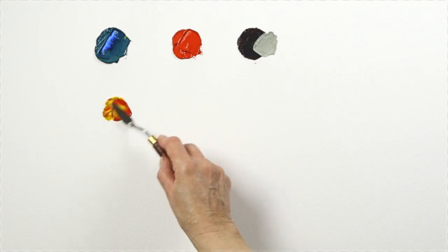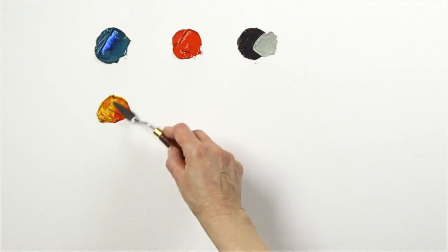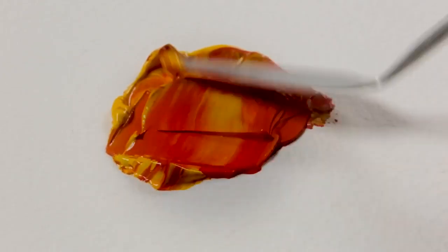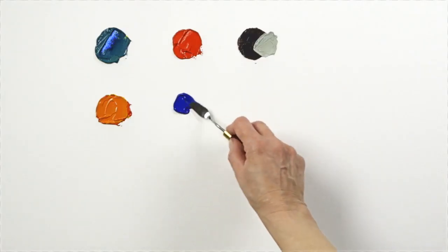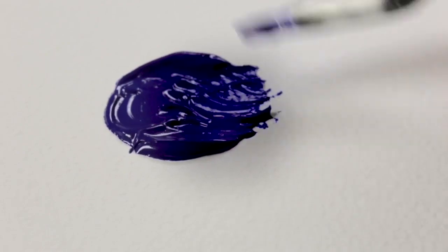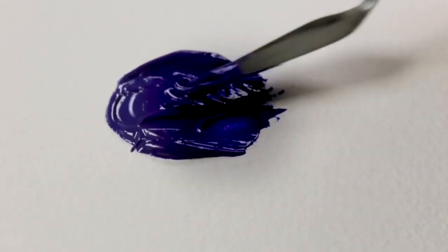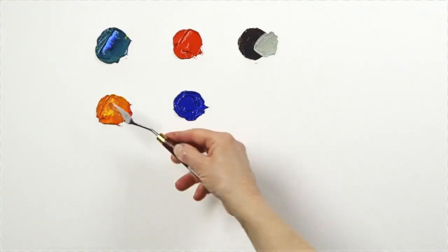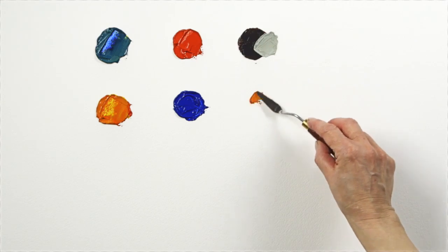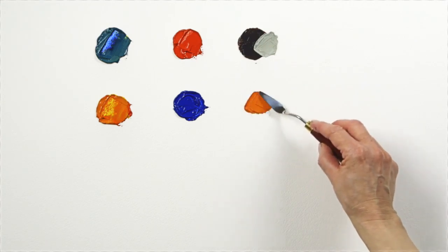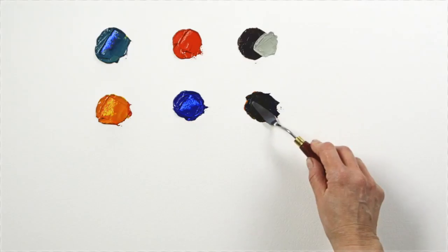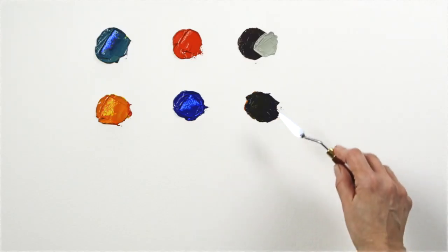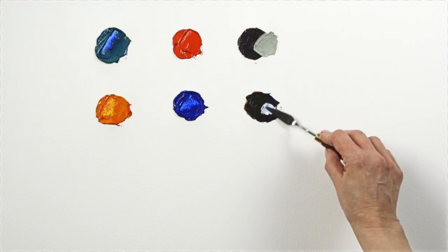You can achieve different results mixing ultramarine blue with an orange made with cadmium red and cadmium yellow. I'll now lighten this with white to show off this grey.